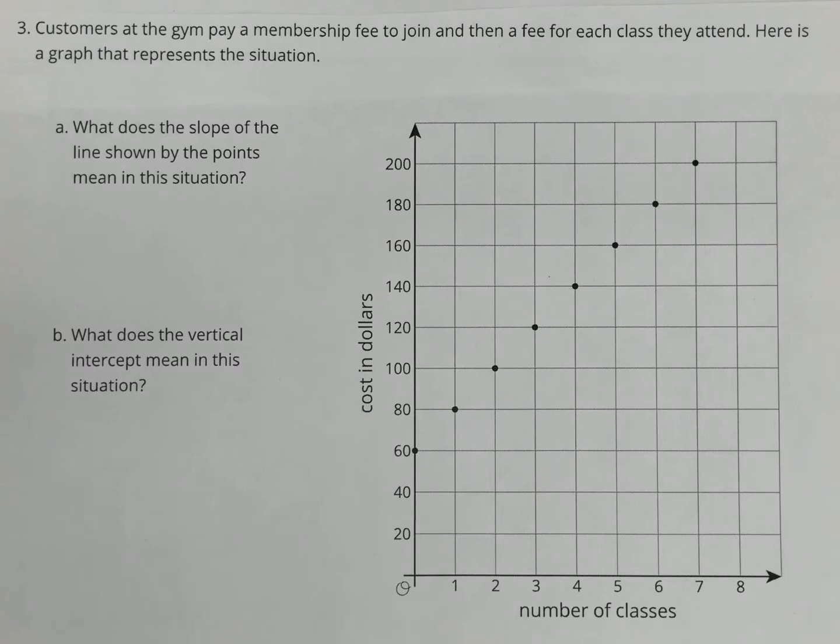In Part A, what does the slope of the line shown by the points mean in this situation? And Part B, what does the vertical intercept mean in this situation?